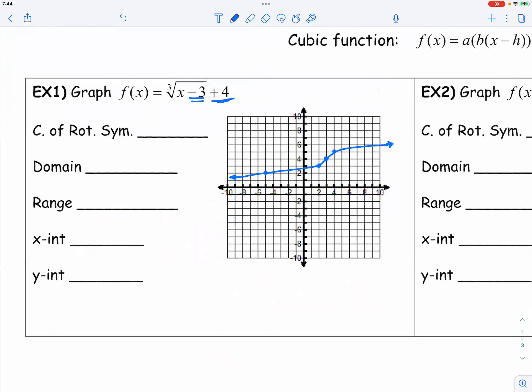That's a graph. That's a cubic root function. And center of rotational symmetry would be 3,4. And like before, the domain and range is going to be super boring. Now, what is not boring would be the x and y-intercept.